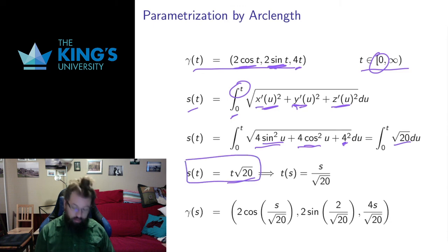So there's my arc length function. This is a particularly nice one. It's just multiplication by a constant. So if I want to invert it, I just divide by root 20. So if I want to express t in terms of s, t is going to be s over root 20 because s was t times root 20. So there's my arc length function. There's my inverse.